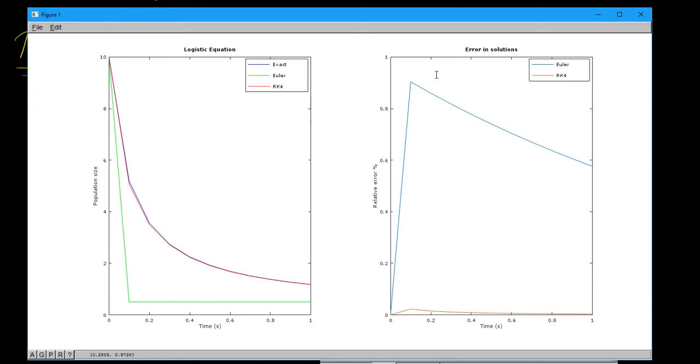Now look at the error in the solutions. For the Euler method, we have this kind of weird thing here, where the thing diverges away and then it starts to converge again. But the relative error is quite large here. Look at the rk4, for example. It stays pretty much at 0 the whole time. So that's a really, really big difference between the two methods.